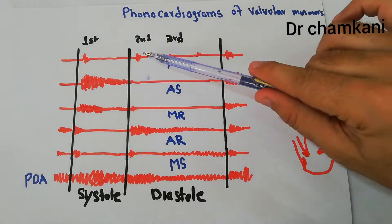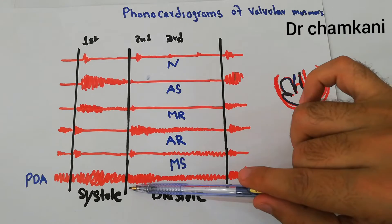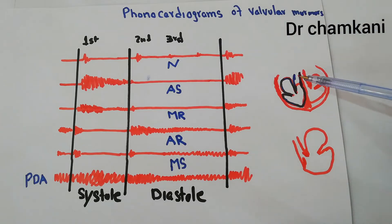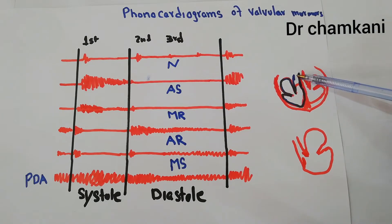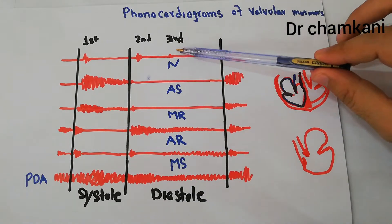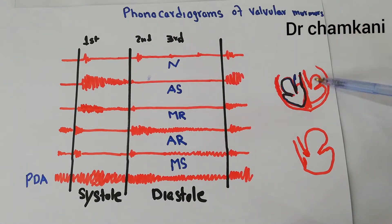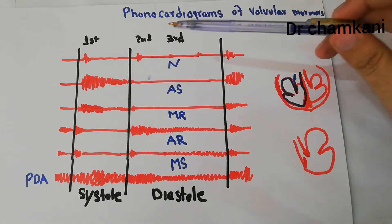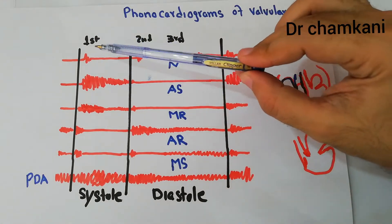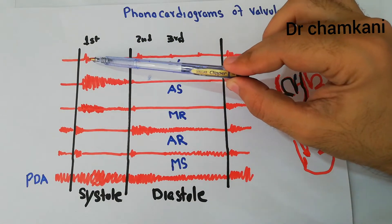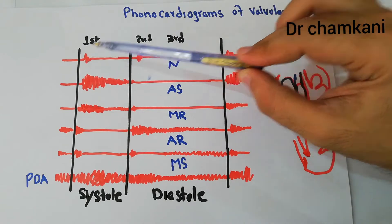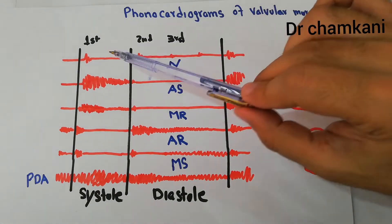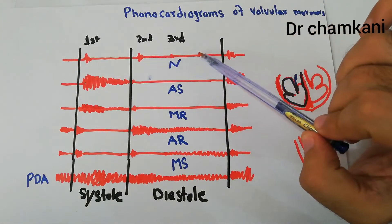As soon as diastole starts, we listen to the second heart sound, which is due to closure of the aortic valve and the pulmonary valve. There is also a third heart sound due to flow of blood in diastole, and sometimes a fourth heart sound, but these are very difficult to appreciate. On the phonocardiogram you can see the loudness of each sound, and the loudness of the first and second heart sounds is greater than that of the third and fourth.